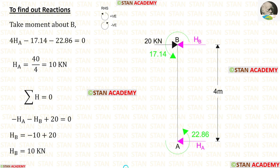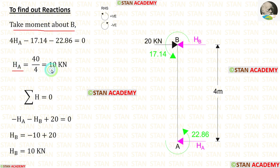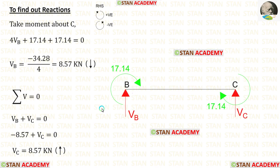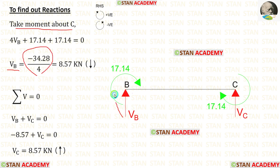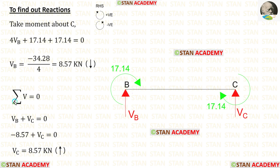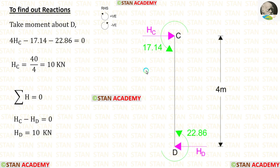Now we are going to find the reactions. First, let us take column AB: by taking moments about B we can find HA, and by applying ΣH = 0 we find HB. Now let us find the reactions in beam BC: by taking moments about C we can find VB. For VB we got a negative value, meaning our assumed direction is incorrect — VB is actually acting downwards. Then applying ΣV = 0 we find VC. Now for column CD: by taking moments about D we find HC, and applying the equilibrium rule we find HD.